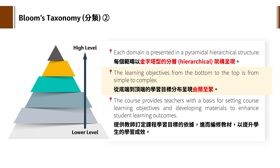每个范畴或领域都以金字塔型的分类架构来呈现。从底端到顶端的学习目标分布，呈现由简至繁——不是说写的很繁，而是说学生在学习过程里面的知识接受会越来越复杂。这样的规范就提供教师订定课程学习目标的依据，进而在编修教材的时候，以提升学生的学习成效为依规。